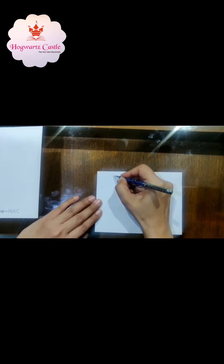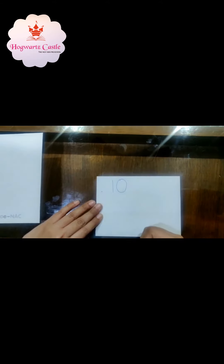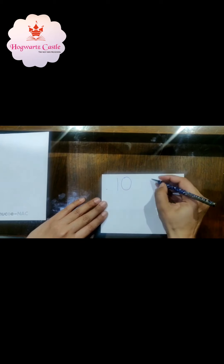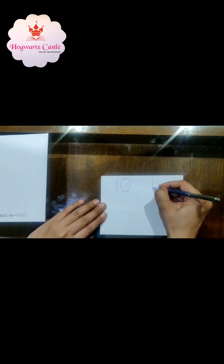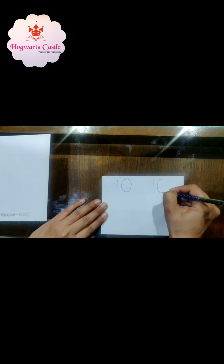So the number we are going to do today is number 10. You know how we write number 10? We first make a standing line and then we make a 0. Number 10: 1, 0, 10. Let's do it one more time — standing line, and then a 0. 1, 0, 10.